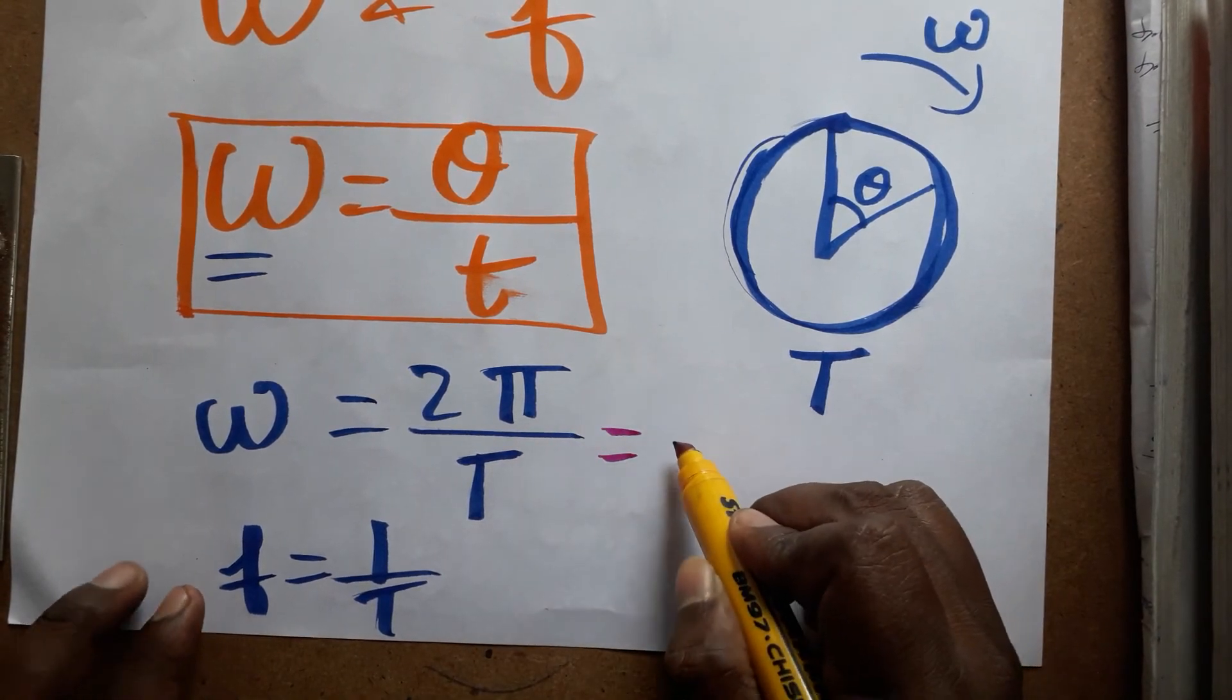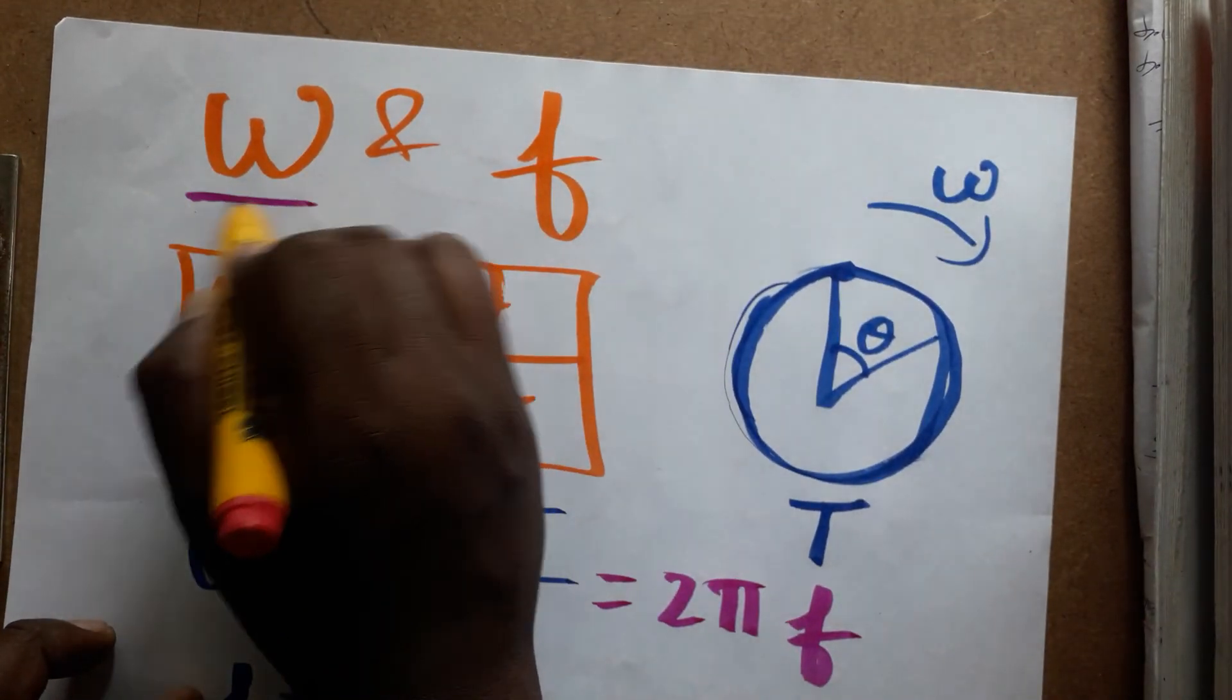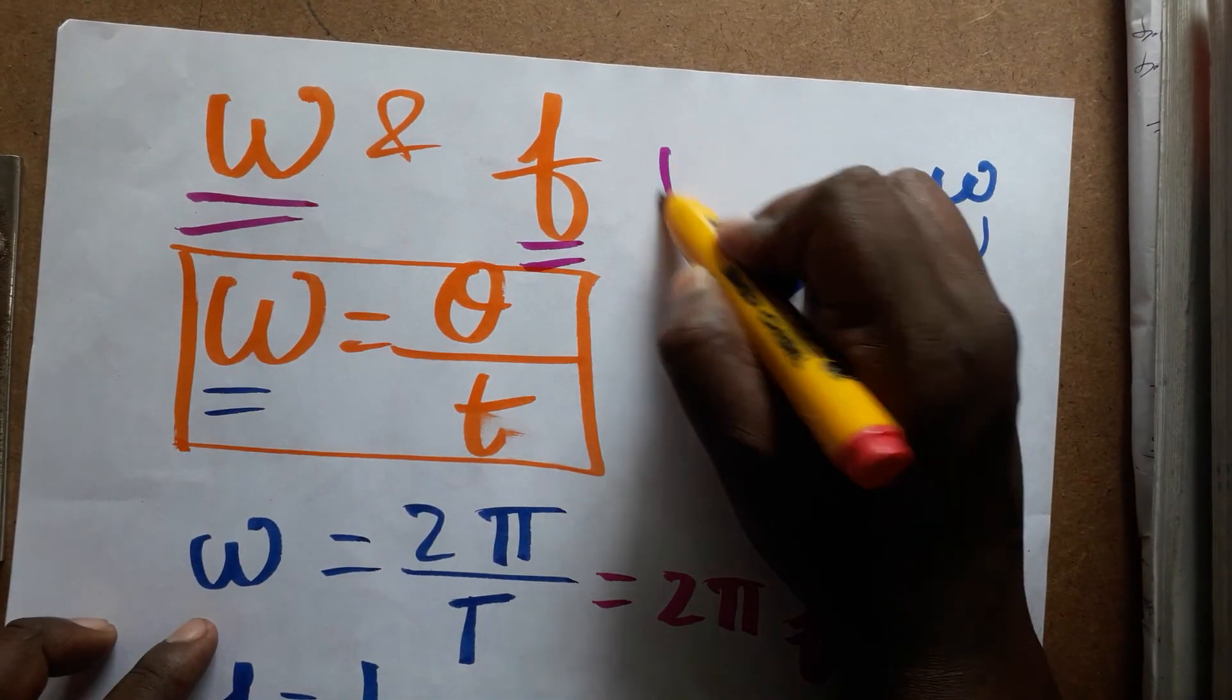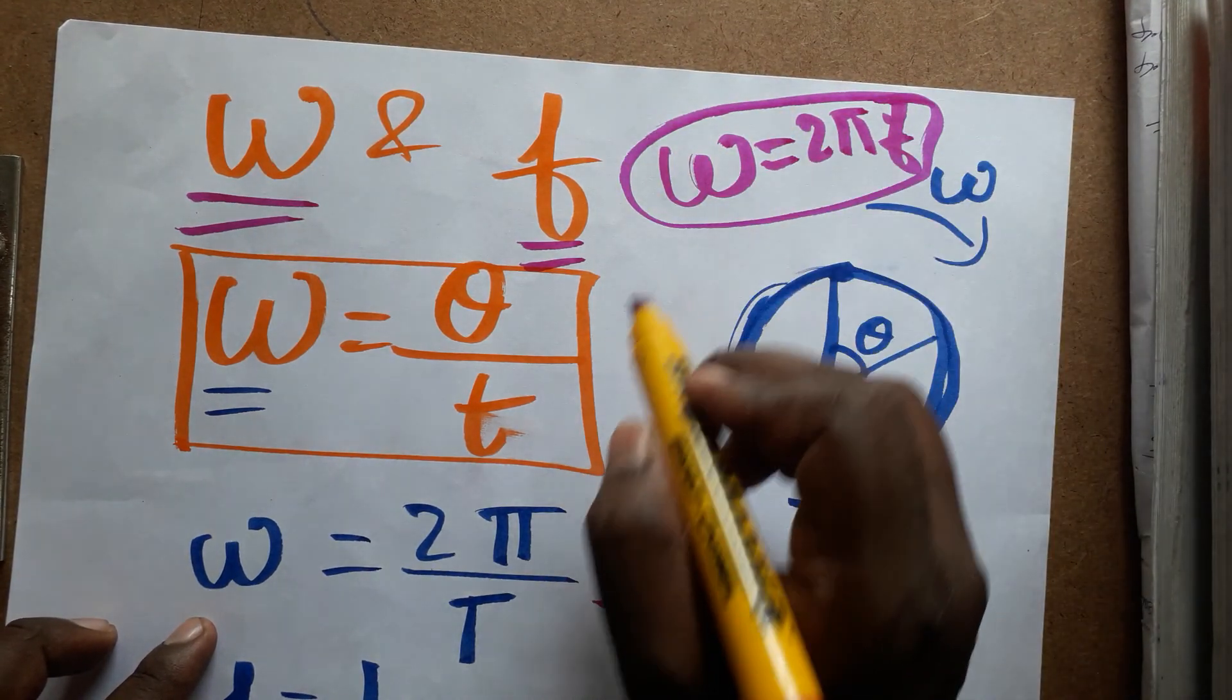Here we have one divided by time period, which I am going to take as frequency. So 2π times f gives us the relation between angular velocity and frequency: omega is equal to 2πf. This is the final relation.